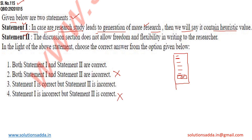Statement two says that the discussion section does not allow freedom and flexibility in writing to the researcher. But then what would be the purpose of a discussion section if the researcher is not given freedom and flexibility to explain what they are trying to say? A researcher should have complete freedom and flexibility to write their thoughts on the topic being discussed.